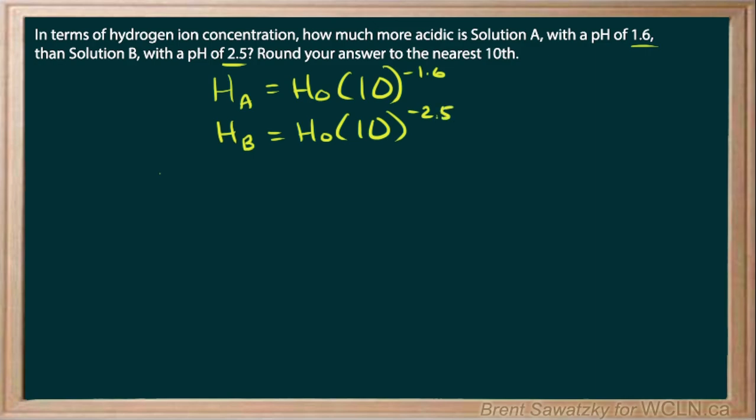We're asked about H_A over H_B, or the comparison of these two concentrations. So A over B, we have H₀ times 10 to the negative 1.6 over H₀ times 10 to the negative 2.5.